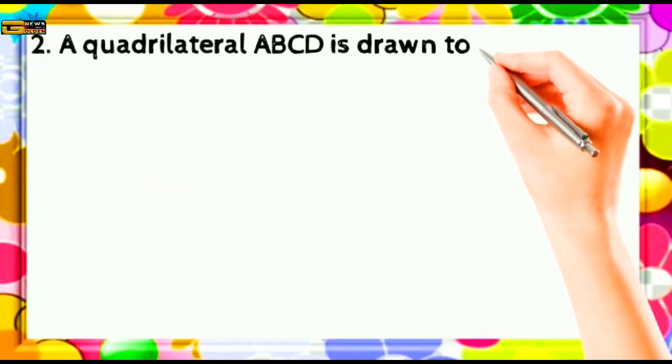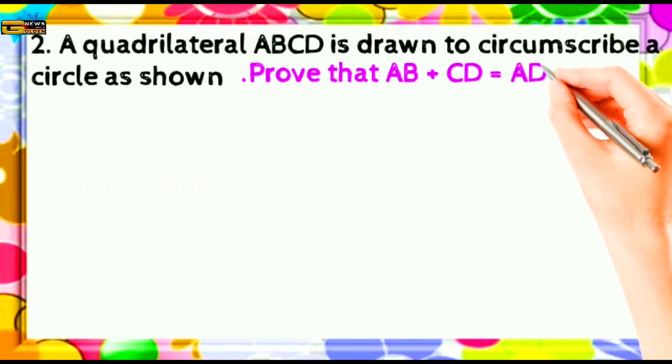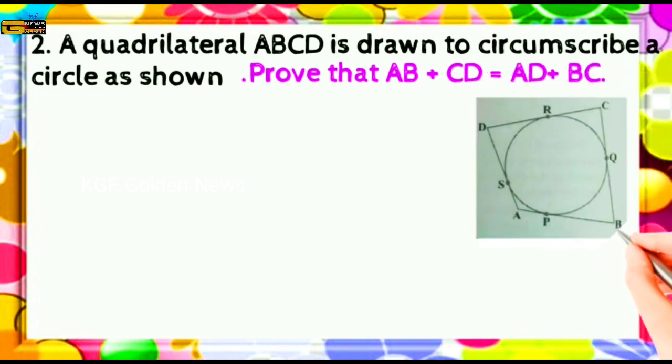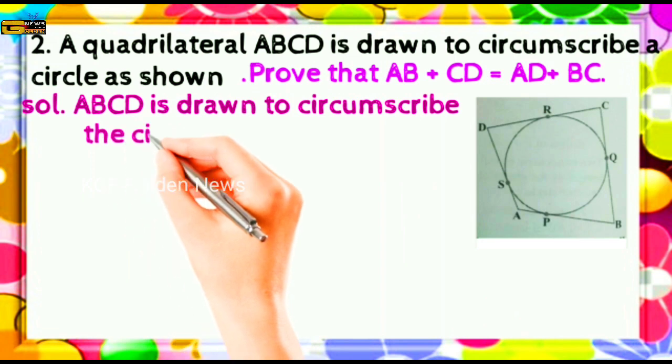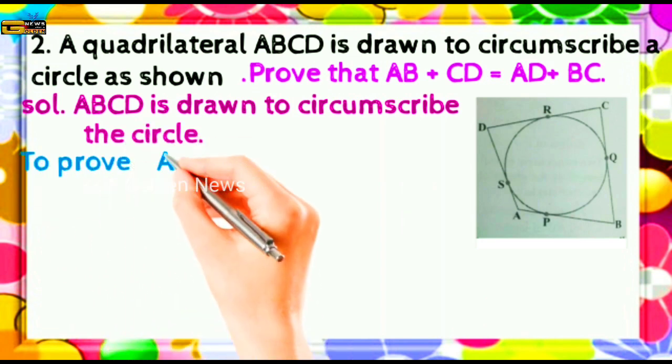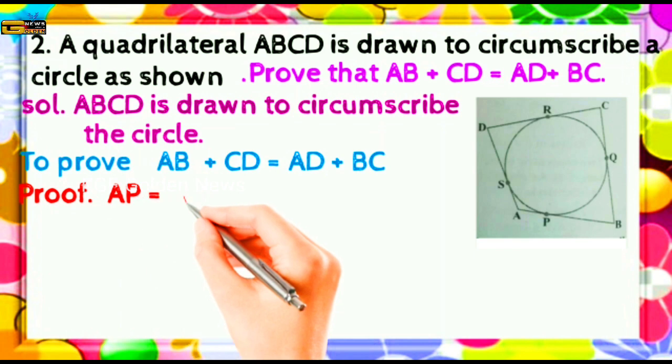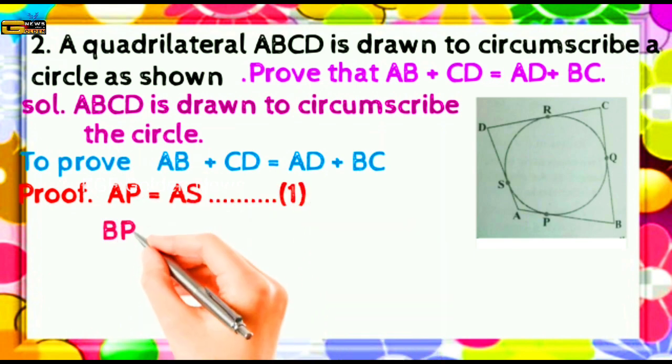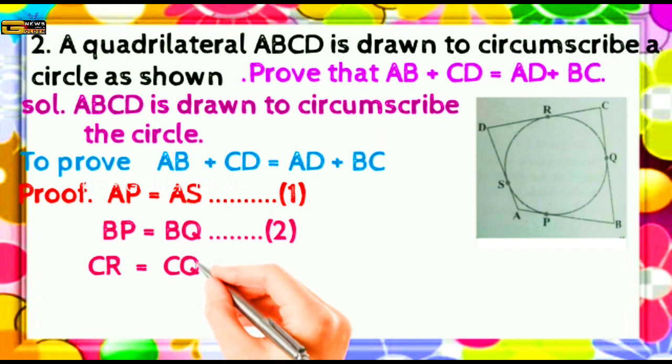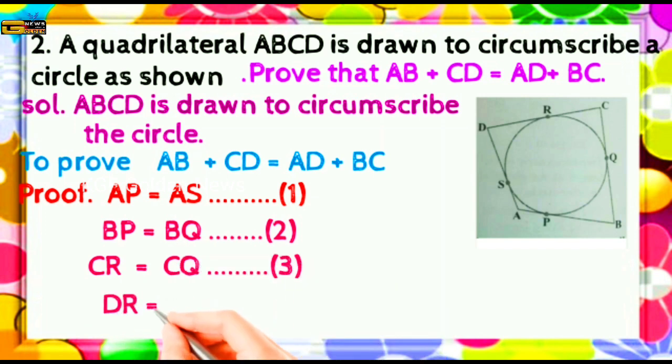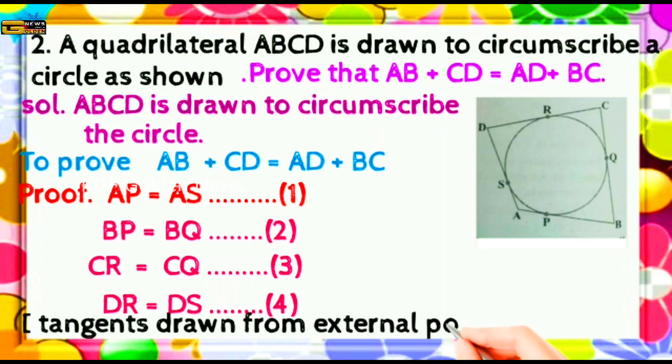A quadrilateral ABCD is drawn to circumscribe a circle. Prove that AB plus CD is equal to AD plus BC. Solution: ABCD is drawn to circumscribe the circle to prove AB plus CD is equal to AD plus BC. Prove AP is equal to AS equation 1, BP is equal to BQ equation 2, CR is equal to CQ equation 3, DR is equal to DS equation 4. Tangents drawn from the external points are equal.